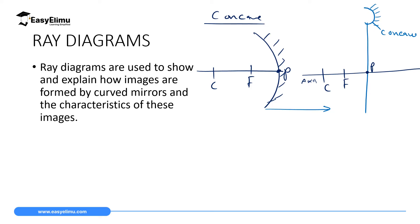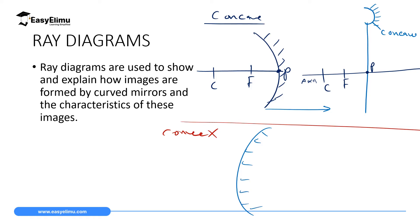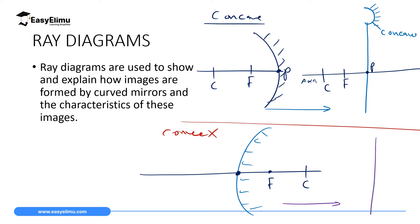For a convex mirror, we have been drawing them with the silvered back and a line running through the pole to the focal point and then the center of curvature — in this case they are behind the reflecting surface. In ray diagrams, we draw it as a single line with a convex curve, silvered behind. The principal axis will have F and C behind the mirror.